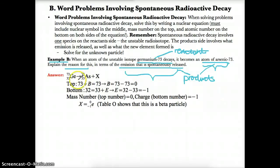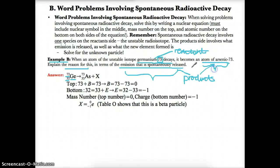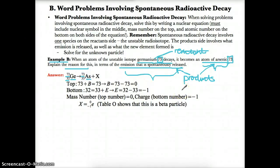For germanium-73, the symbol from Table S is Ge, mass number is 73, and the atomic number from the periodic table is 32. For arsenic-73, the symbol is As, mass number is 73, and atomic number is 33. The unknown emission X has mass B on top and charge E on the bottom. Setting up the mass equation: 73 = 73 + B, so B = 0. For charge: 32 = 33 + E, so E = -1.